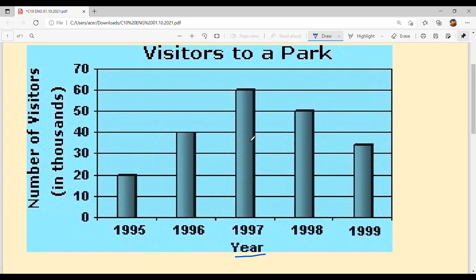Now, let's study this bar graph. In 1995, 20,000 people visited. In 1996, 40,000 visited because the bar reaches up to 40.